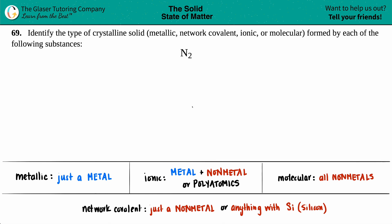Number 69. Identify the type of crystalline solid, whether it's going to be metallic, network covalent, ionic, or molecular crystalline solid, that's formed by each of the following substances. In this case we have N2. So what is N2 when it solidifies or makes a crystalline solid? Well, there's four types of crystalline solids, which I wrote down here. This is kind of like a cheat sheet to go over the different types of crystalline solids.